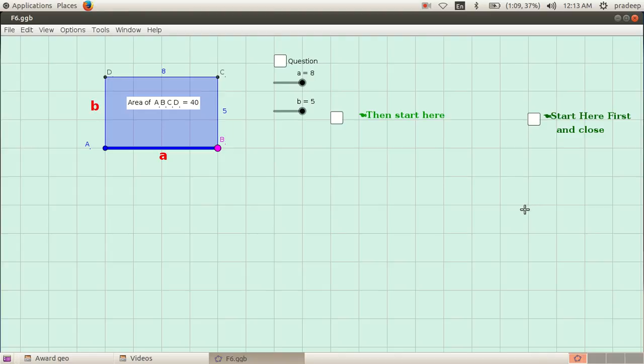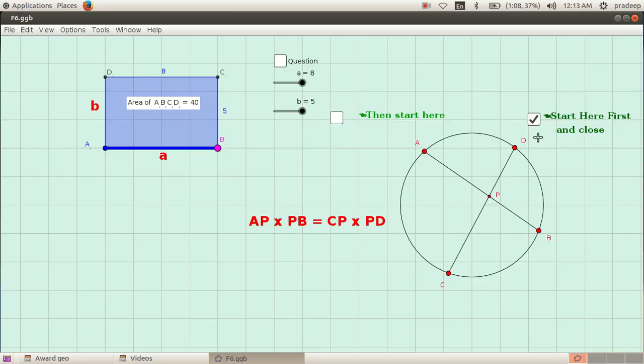This is a problem based on a concept from circles in tenth standard. If AB and CD are two chords of a circle intersecting at point P, then the product AP times PB must be equal to CP times PD. We have to make use of this concept in this problem.